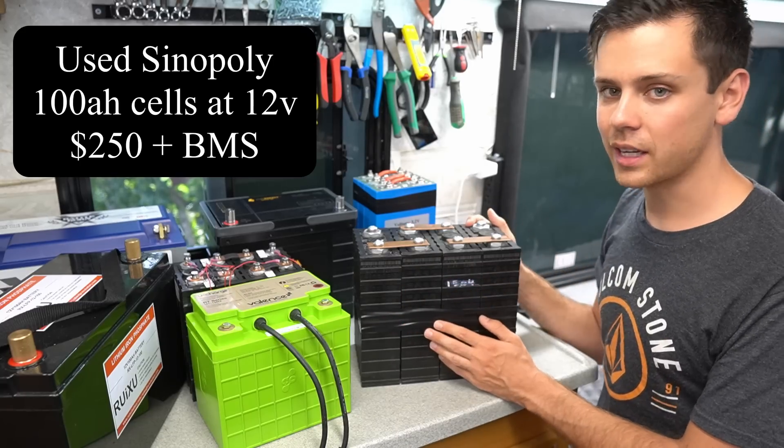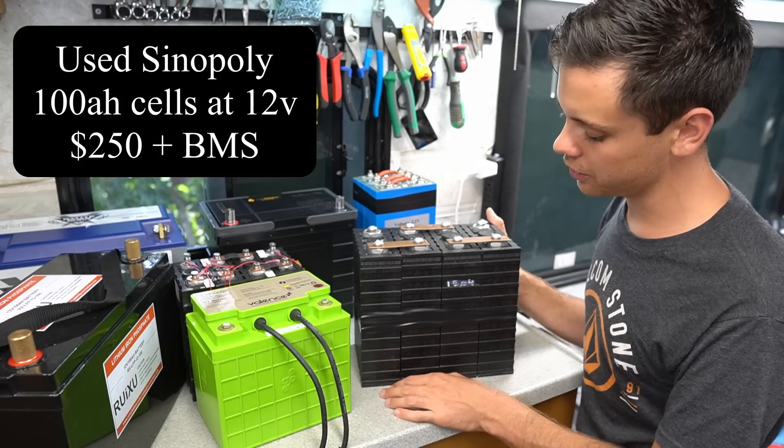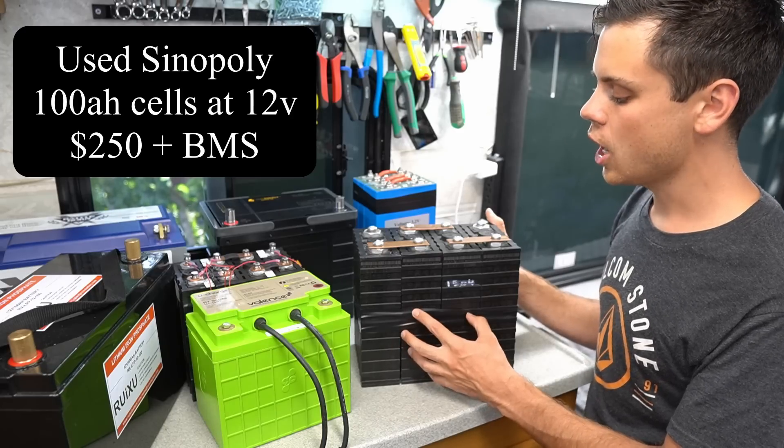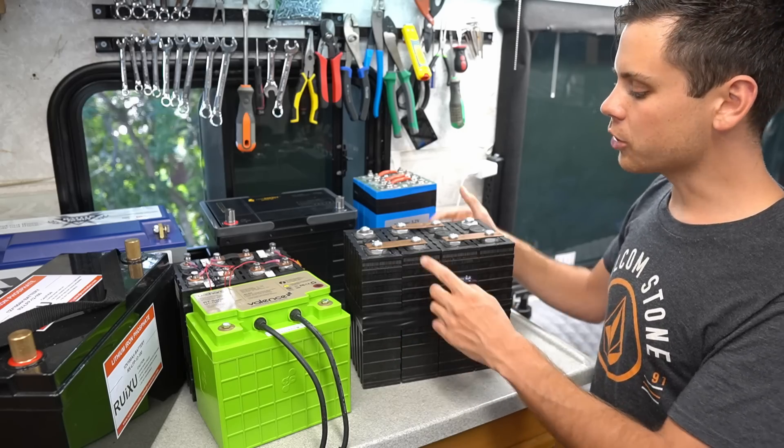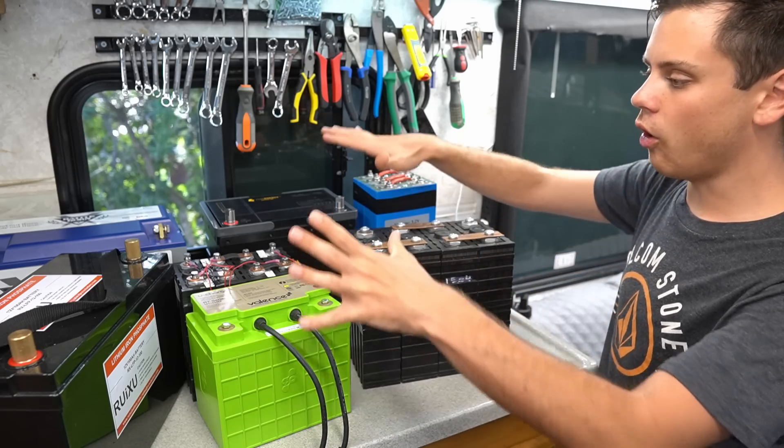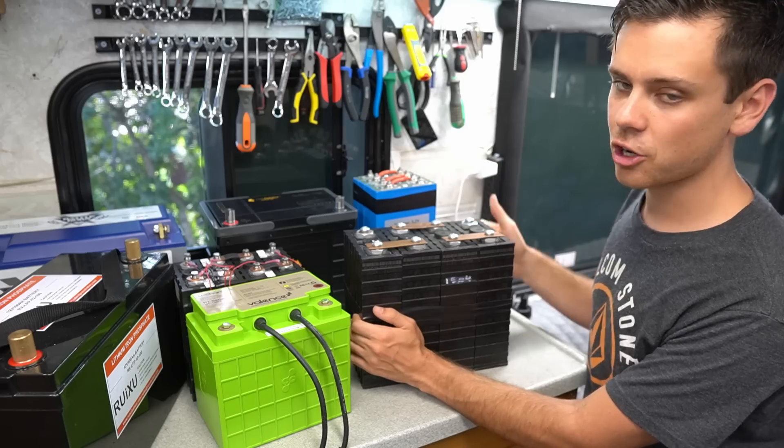Not long ago you could actually buy these pretty easily but once I made a video on those, these are out of stock everywhere. But for 100 amp hours at 12 volts this costs like $250. So this is technically cheaper than all the batteries but you have to add your own BMS.